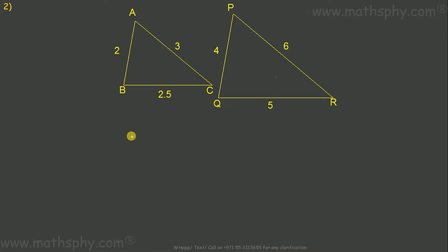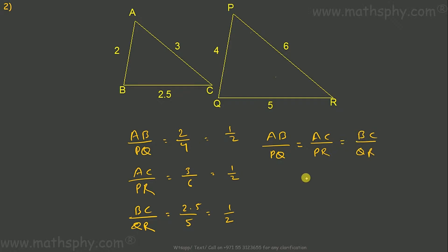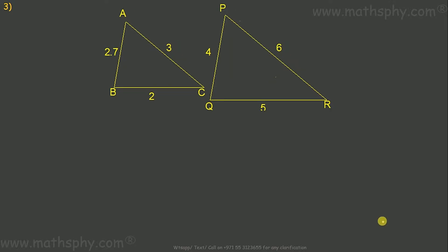For the second pair: AB over PQ is 2 over 4, AC over PR is 3 over 6, and BC over QR is 2.5 over 5. This gives 1/2, 1/2, and 1/2 — so AB/PQ = AC/PR = BC/QR. As per the Side-Side-Side (SSS) criteria, triangle ABC is similar to triangle PQR.